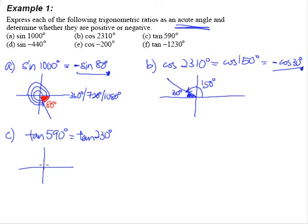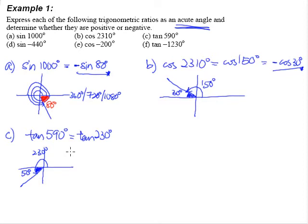230 degrees is not an acute angle, so we need to locate it. 230 degrees is in the third quadrant. The acute angle we're most concerned with is 50 degrees, calculated as 230 minus 180 equals 50 degrees.